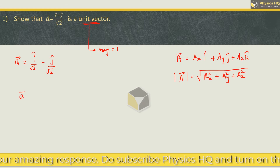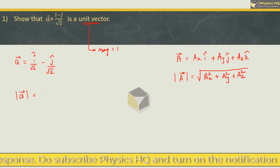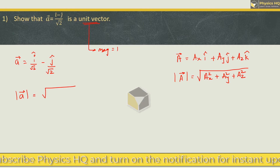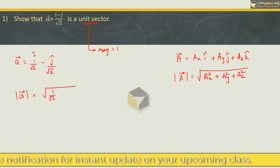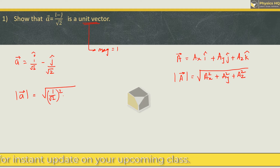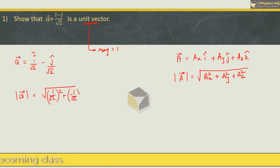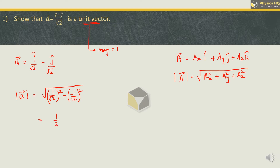For finding out the magnitude of this vector, we have only two components: component along x and component along y. So we have (1/√2)² + (-1/√2)². It doesn't matter that it's negative because we are taking the square. So 1/√2 squared is 1/2, and -1/√2 squared is again 1/2. This equals √1 = 1. Therefore, vector A is a unit vector.